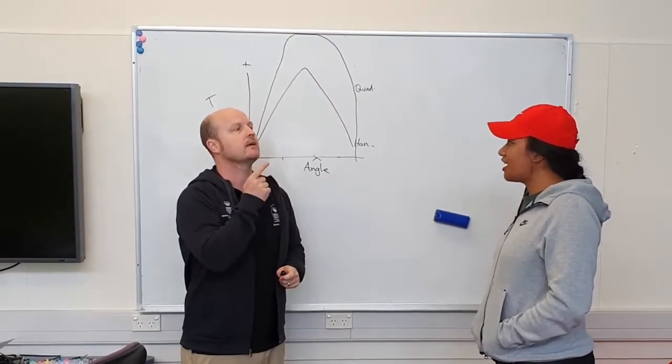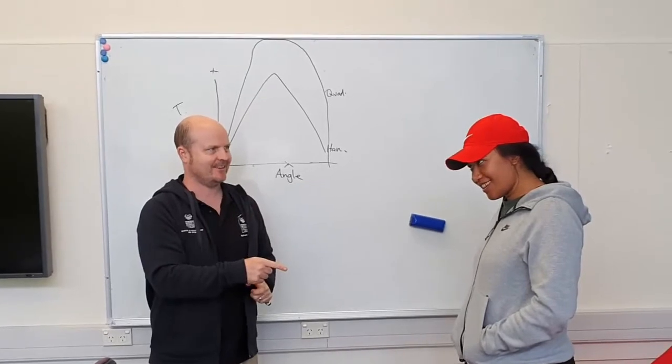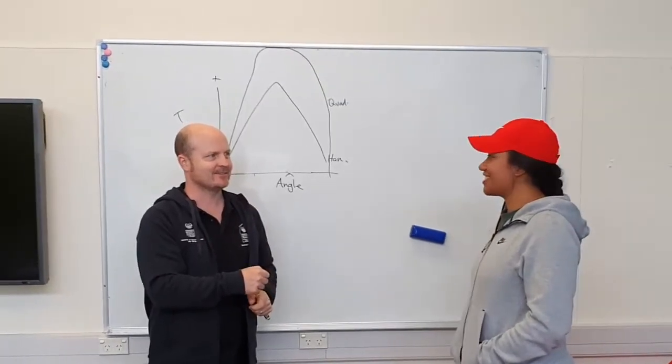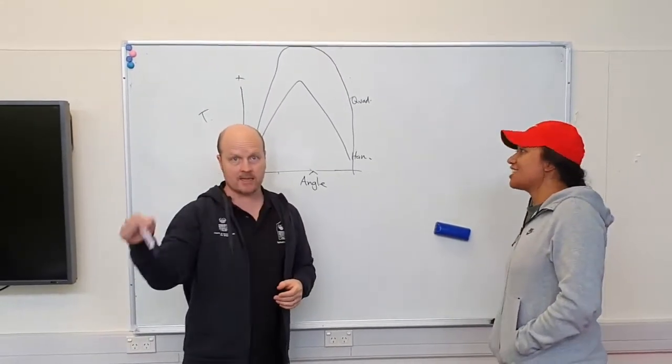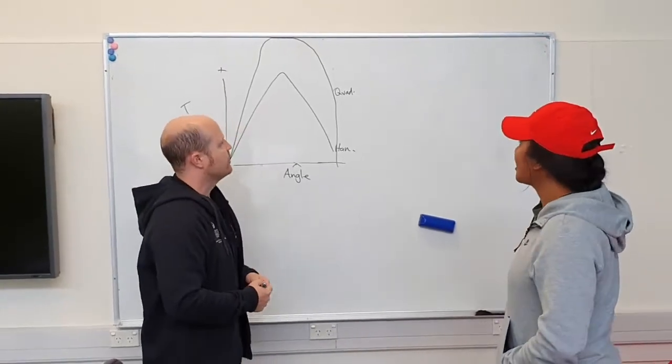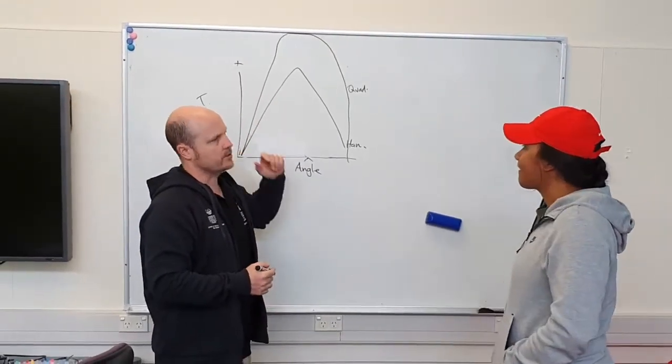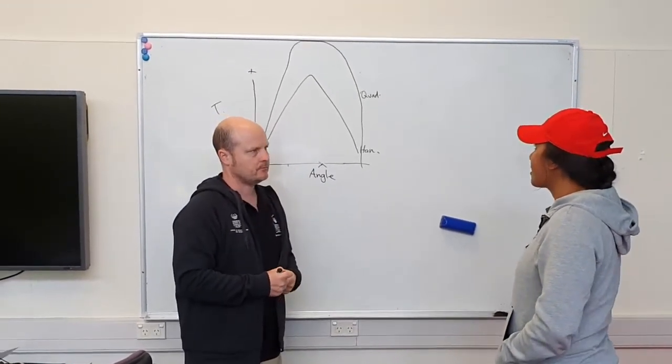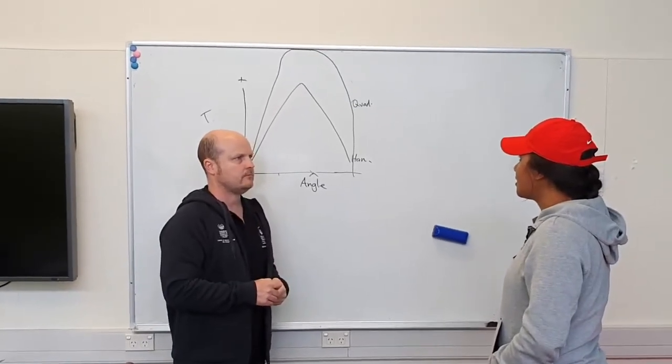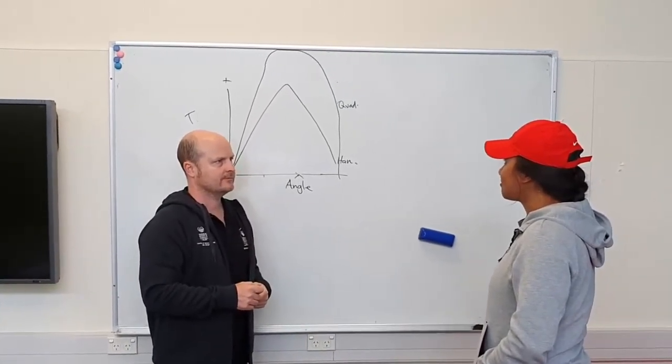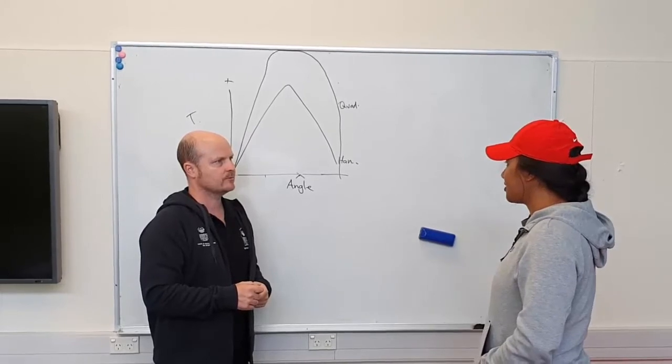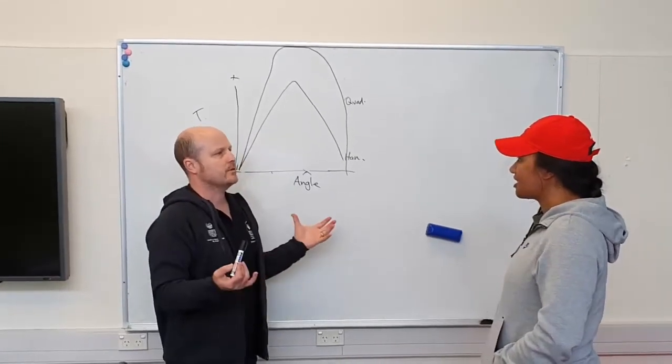Agonist-antagonist ratio. So if this ratio is too big, what are we going to do? Strengthen our hamstrings. What type of training are we going to do?